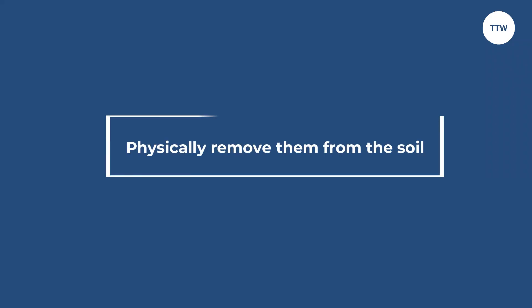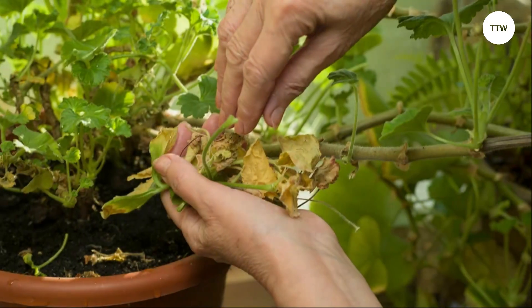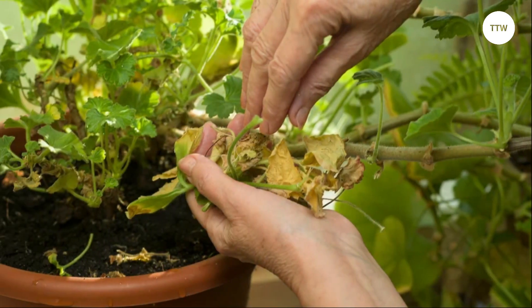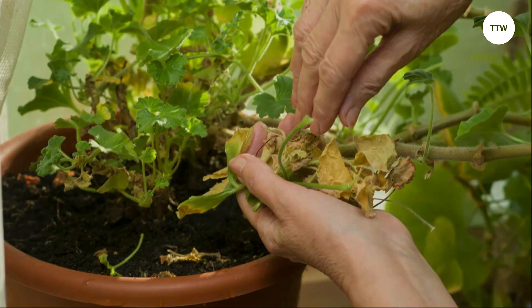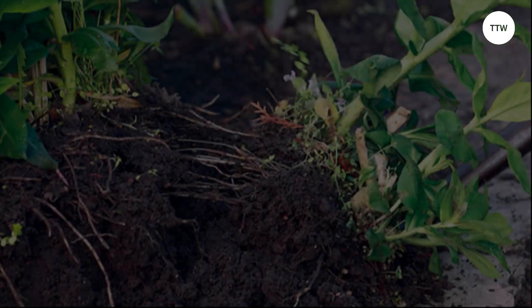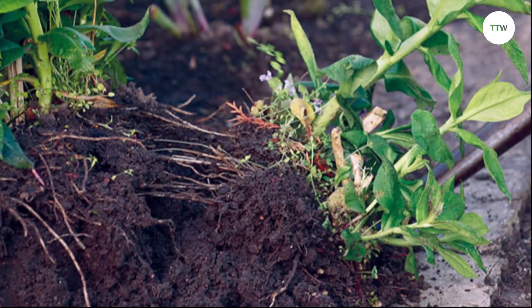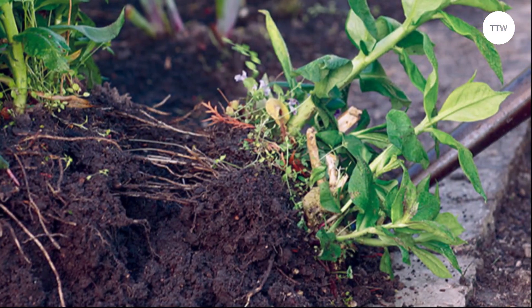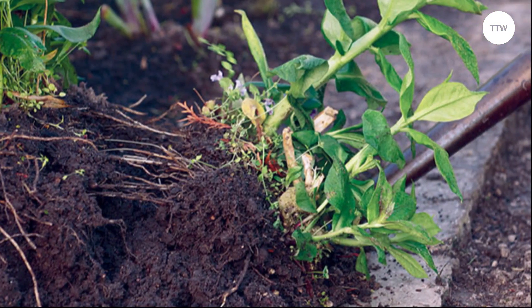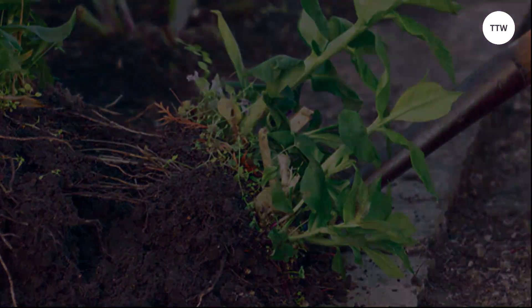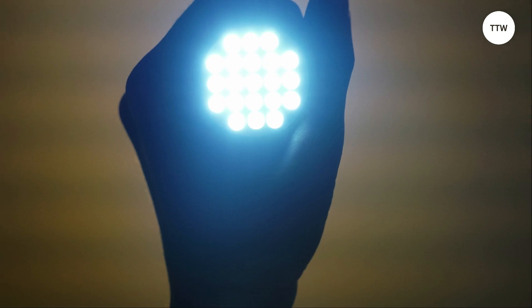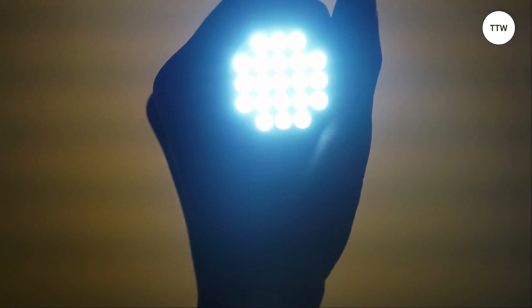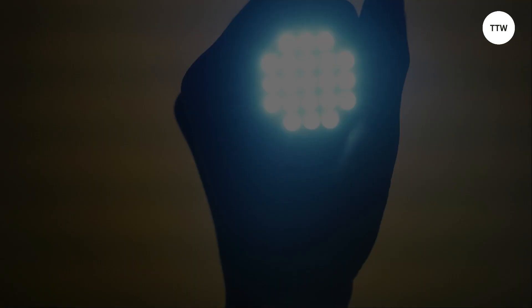Physically remove them from the soil. One of the simplest ways to control cutworms is to remove them from the soil physically. You can do this by digging around the base of the plants and removing any cutworms you find. You can also use a flashlight to look for cutworms when they are most active at night.